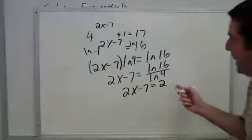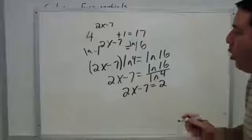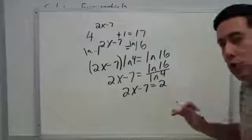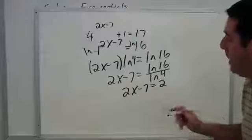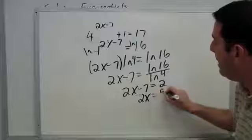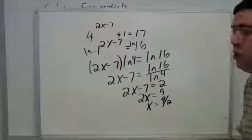Be sure that you press equals after you've done that LN of 4 or your calculator is not telling you the entire quotient but just what LN of 4 is. Once we're here, let's add the 7 and divide by the 2 to get 9 halves as a solution.